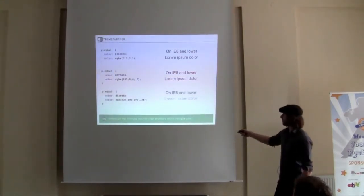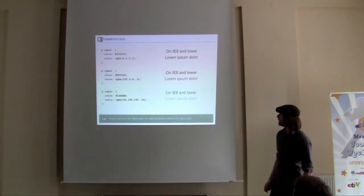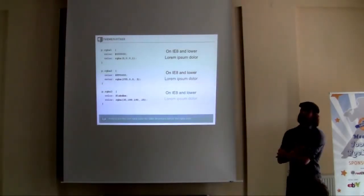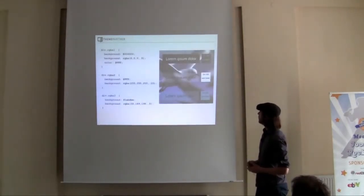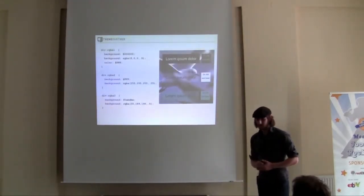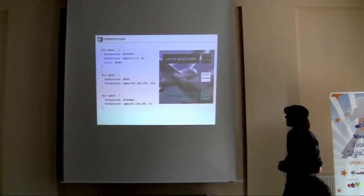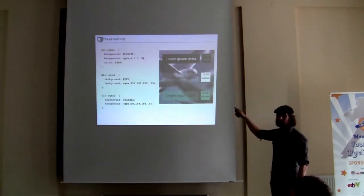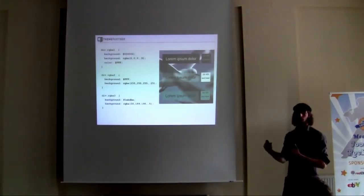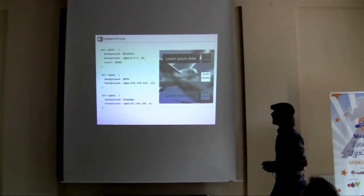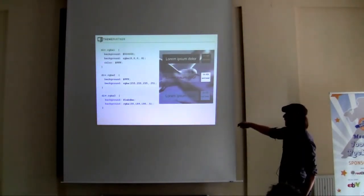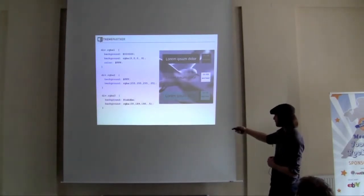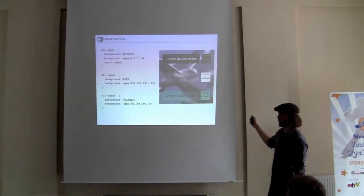Another example with another color to show the different values for RGBA. Now we're going to look at the background. I put an image on the background to show you what the alpha level does, instead of just a white background. In the second example, I used 255 for everything, which creates a white, and then a 25% alpha channel to show the difference between older and newer browsers.